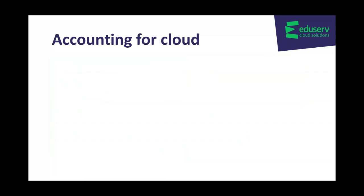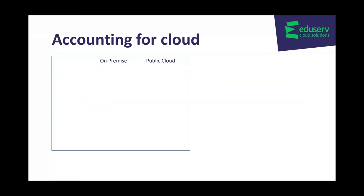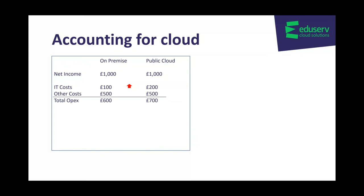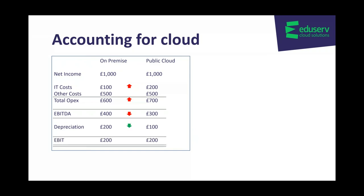So, accounting for cloud — let's put some figures in. This is a basic model looking at the shift from on-premise to cloud. Keeping everything simple, we're increasing IT costs by 100 because of the consumption model within public cloud. Other costs stay the same, so total OPEX goes up by 100, meaning your EBITDA — your operating profit — goes down by 100. But when you purchase cloud, you're increasing your IT costs while decreasing your depreciation because you won't have so many assets depreciating. So EBIT stays the same.